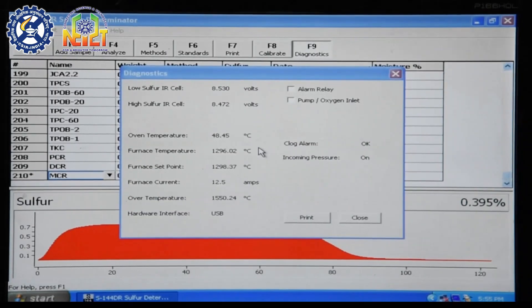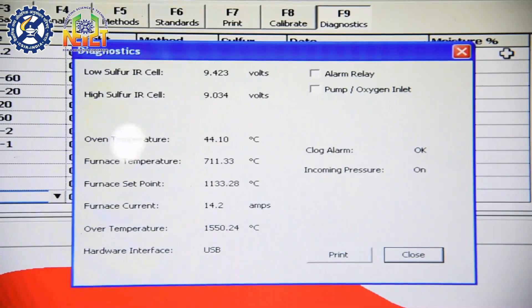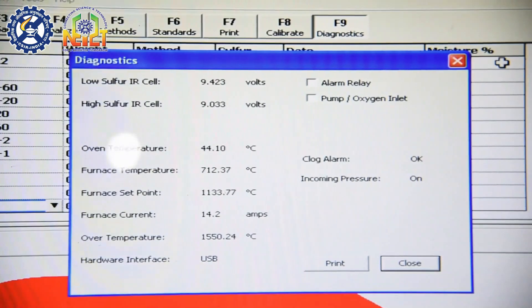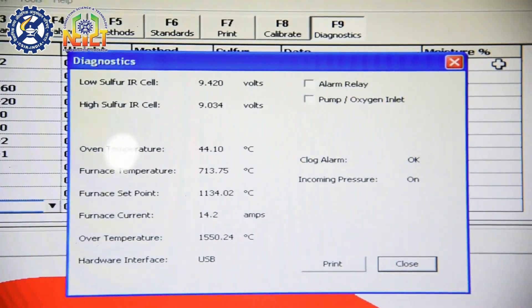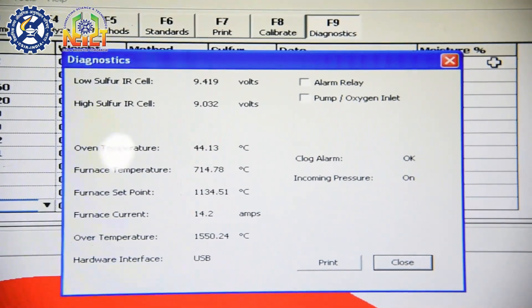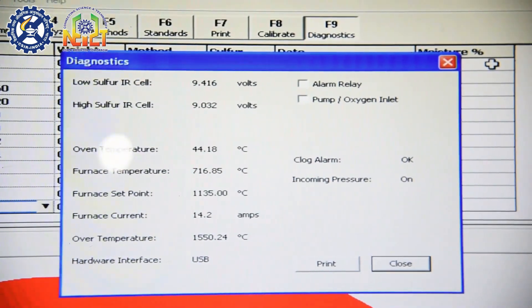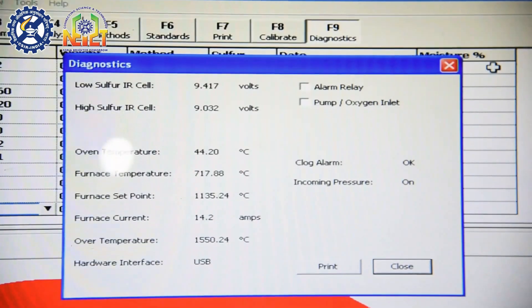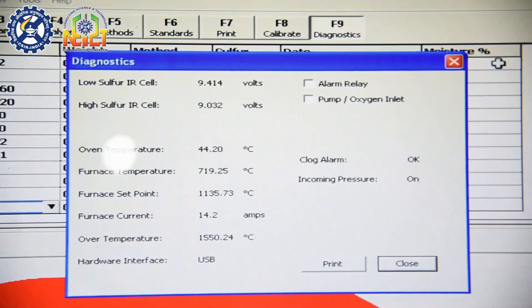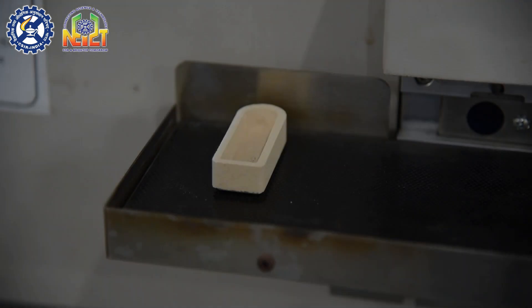From the tools menu, click diagnostics. Check the IR cell output range, which should be between 7.500 to 9.500 volts. Wait till furnace temperature reaches the set point of 1350 degrees centigrade. It may take some time. Be sure that the analyzer has reached the set temperature before beginning the analysis.